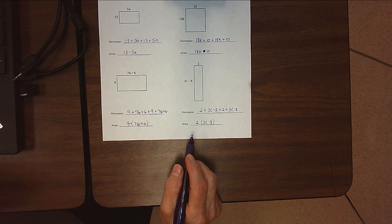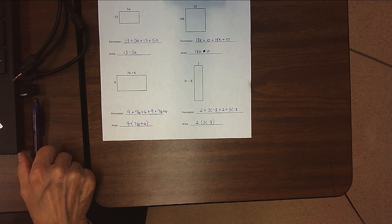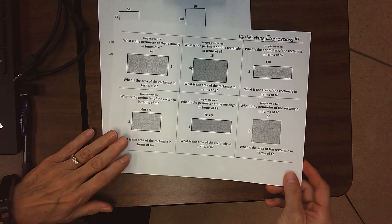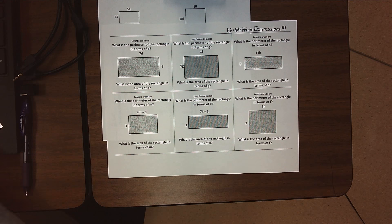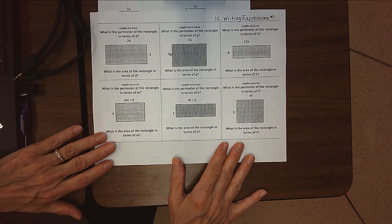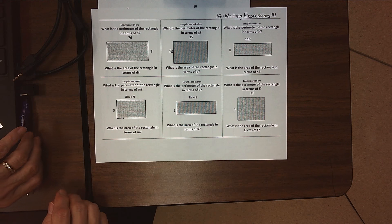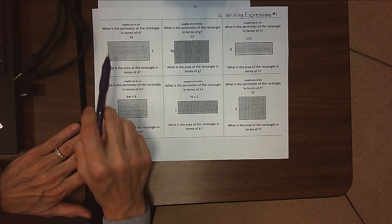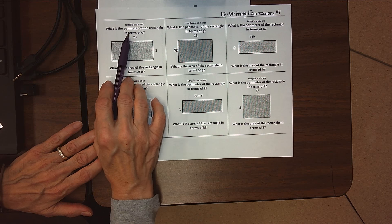Now you're going to practice a little bit with an assignment called Writing Expressions Number One. One thing that's a little different on these—it says what is the perimeter of the rectangle in terms of d.